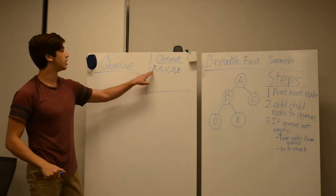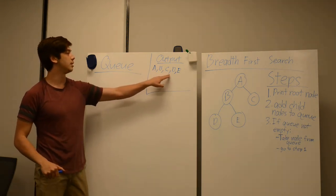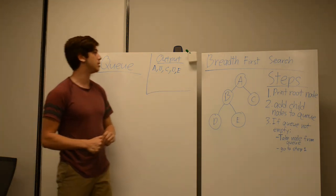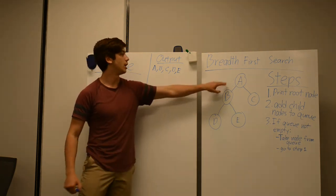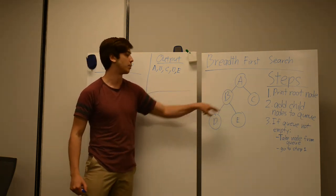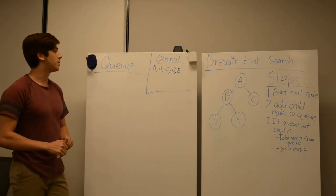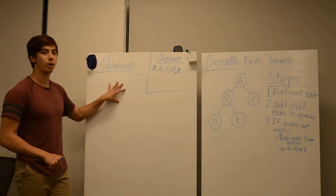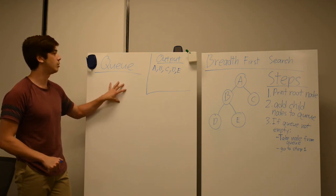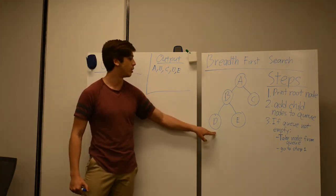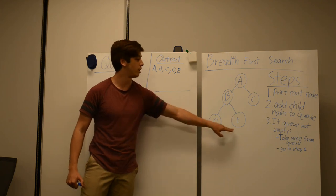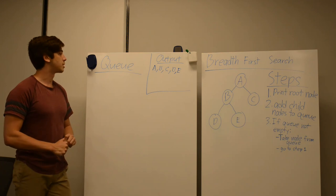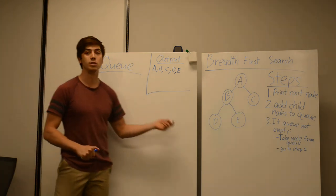So our final output is going to be A, B, C, D, E. The time complexity of this algorithm is the same as depth first search — it is O(N), where N is the number of nodes in the tree. However, the space complexity is the maximum size that the queue will grow, which is the width of the binary tree. So in this example we have a width of three, making the space complexity O(W), where W is the width.